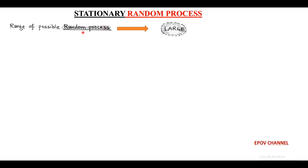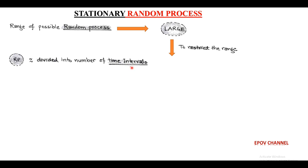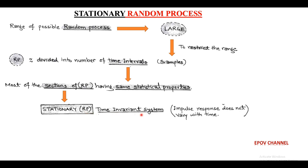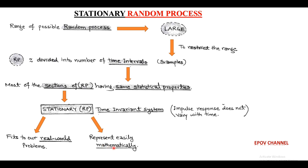Next, we are going to discuss a special case of random process that is called stationary random process. We consider a large range of possible random processes. To restrict this wide range, random process is divided into a number of time intervals called samples. Most of them have identical statistical properties. Such sections of random process with identical statistical properties are called stationary random process, and these random processes behave as time-invariant systems where the impulse response does not vary with time. In real-world problems, stationary random process fits satisfactorily and can also be represented mathematically in a precise manner.